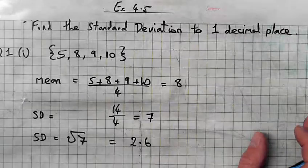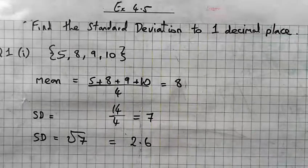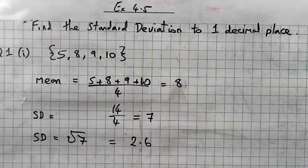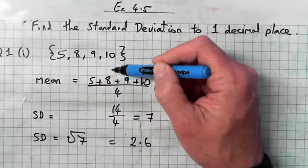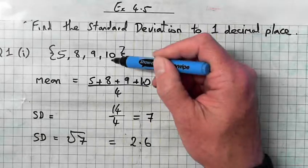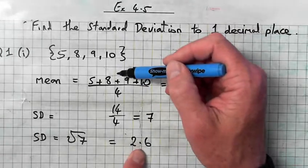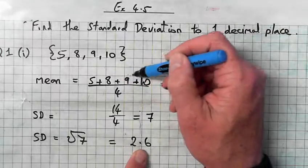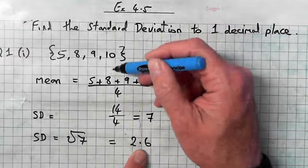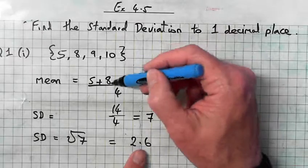So again, what the standard deviation means: it gives you an indication of how spread out the data is. So this data is pretty close, isn't it? Where's the mean? The mean is at 8, and is the data spread out very far from 8? It's not, it's only about 2.6 roughly on average away from 8.